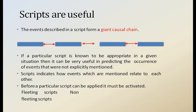The advantage of using scripts is that events happening in a continuous or connected manner form a giant causal chain. If a particular script is known to be appropriate in a given situation, it can be very useful in predicting the occurrence of events that were not explicitly mentioned. Scripts also indicate how events are related to each other, and before a script can be applied, it must be activated.